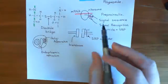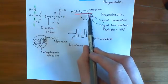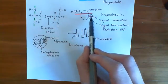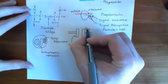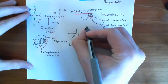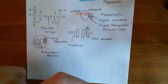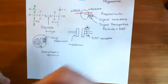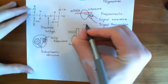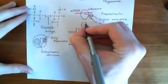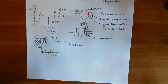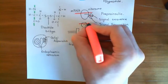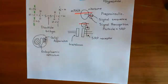Our signal recognition particle is bound to the signal sequence at the beginning of the pre-proinsulin — translation is halted. What will now happen is this signal recognition particle will bind to the signal recognition particle receptor on the ER membrane, and the whole complex — the ribosome, mRNA, and growing polypeptide — will be translocated to the ER membrane.